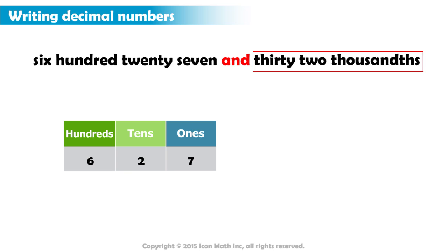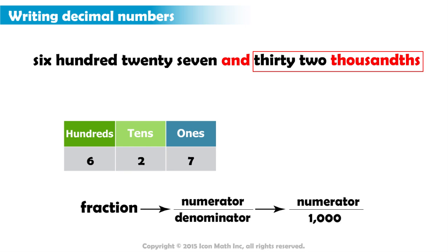we first need to notice the last bit of the sentence. It says thousandths. This immediately tells us that the decimal part represents a fraction, with a numerator and a denominator, with 1,000 in the denominator.